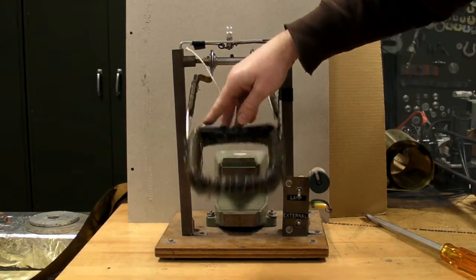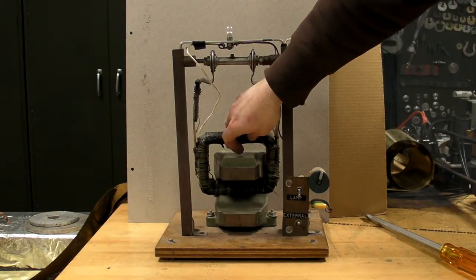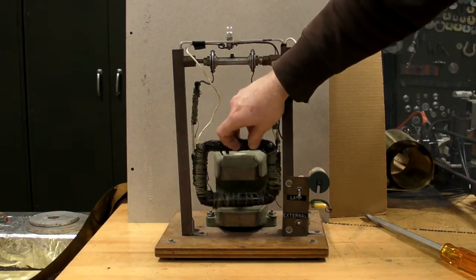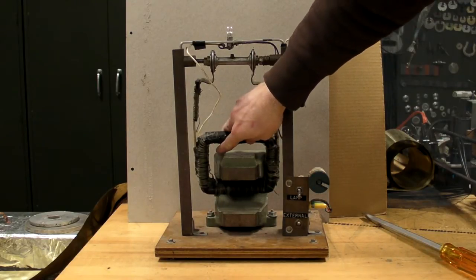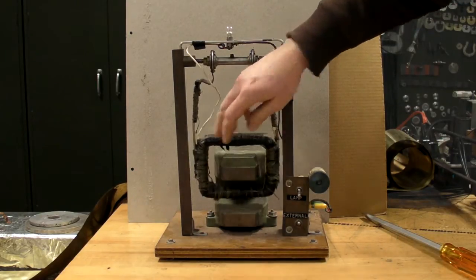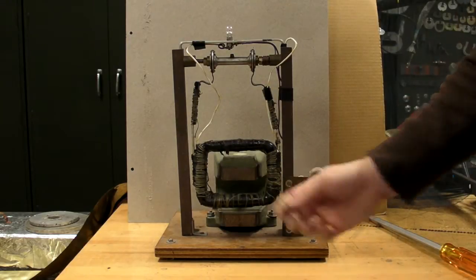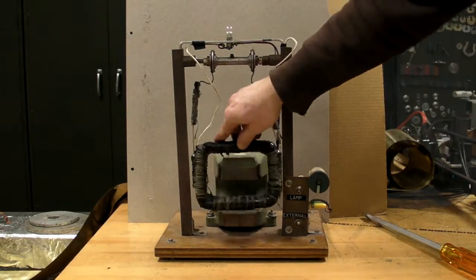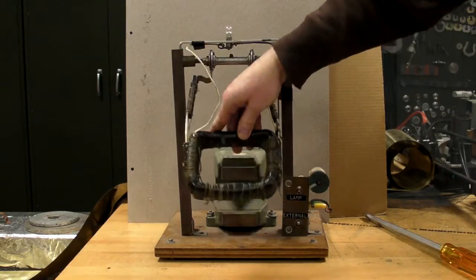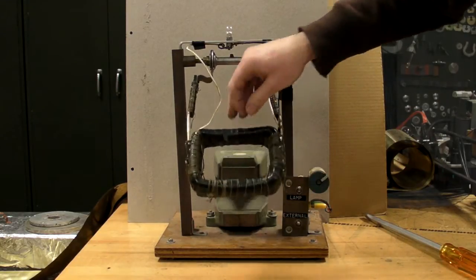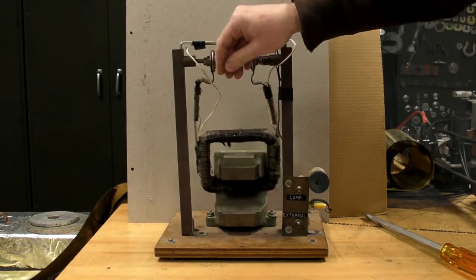The motor shows how the current goes a different direction as you put the coil in the magnet or if you pull it out of the magnet. And then if you do both at the same time, you really feel a force as you try to move the coil in and out of the magnetic field.